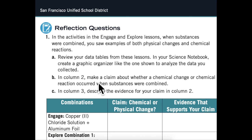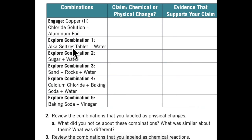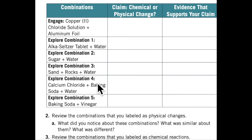In column two, make a claim about whether a physical change or chemical reaction occurred when substances were combined. In column three, describe the evidence for your claim in column two. The combinations were: from the engage — copper chloride solution and aluminum foil; from the explore — combination one: alka-seltzer tablet and water; combination two: sugar and water; combination three: sand, rocks, and water; combination four: calcium chloride, baking soda, and water; combination five: baking soda and vinegar.